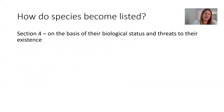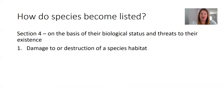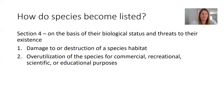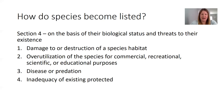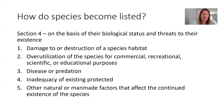How does a species become listed? This is in Section 4 of the ESA. Species are listed on the basis of their biological status and threats to their existence. This includes: damage to or destruction of a species' habitat; overutilization of the species for commercial, recreation, scientific, or educational purposes; disease or predation; inadequacy of existing protection; and other natural or man-made factors affecting the continued existence of the species. That last one is very broad. These are the official reasons why a species could become listed.